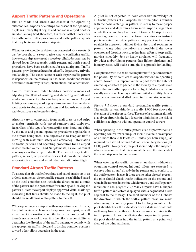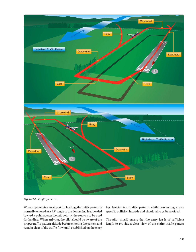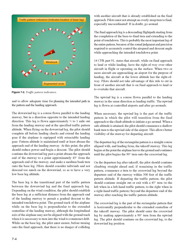Upon identifying the proper traffic pattern, the pilot should enter into the traffic pattern at a point well clear of the other airplanes. When approaching an airport for landing, the traffic pattern is normally entered at a 45-degree angle to the downwind leg, headed toward a point abeam the midpoint of the runway to be used for landing. When arriving, the pilot should be aware of the proper traffic pattern altitude before entering the pattern and remain clear of the traffic flow until established on the entry leg. Entries into traffic patterns while descending create specific collision hazards and should always be avoided. The pilot should ensure that the entry leg is of sufficient length to provide a clear view of the entire traffic pattern and to allow adequate time for planning the intended path in the pattern and the landing approach.